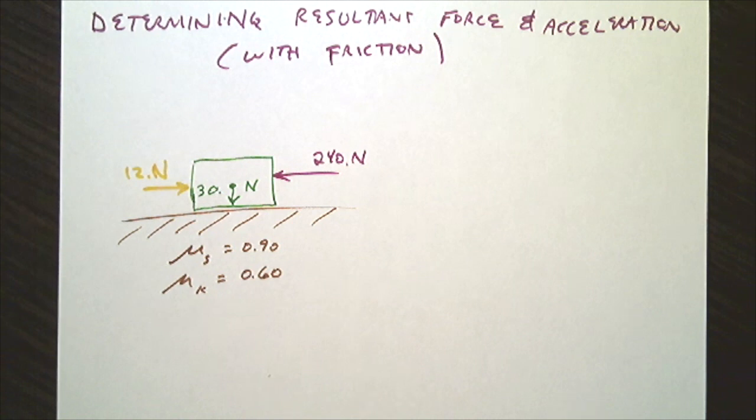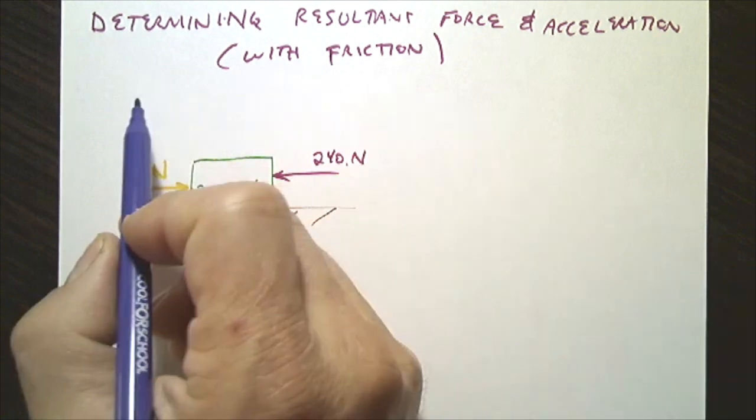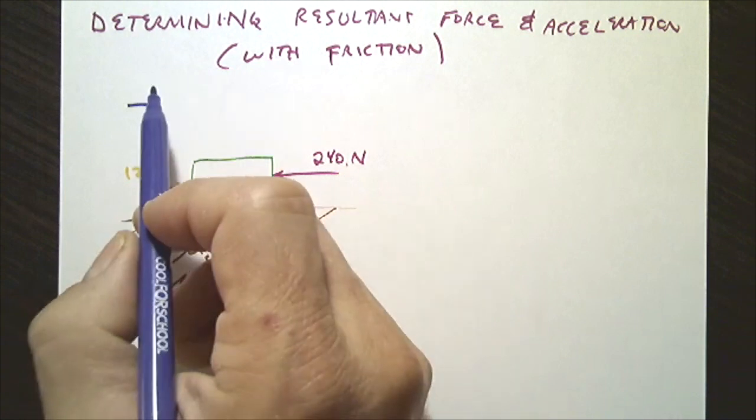We will determine the resultant force and acceleration of a block sitting on a surface. In this case, there is friction. First, we define our positive x-direction.